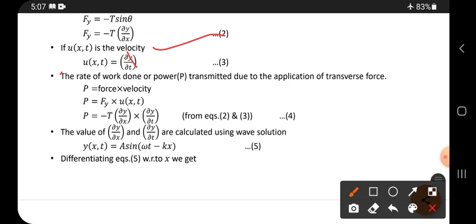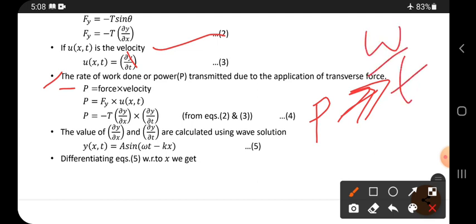Now the rate of work done or power transmitted due to the application of transverse force is P equals force times velocity. Why do we take power here? Energy is transmitting per unit time, so work by time is also power. Power can be written as force times velocity.